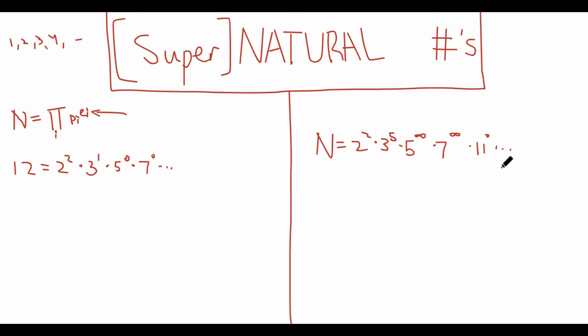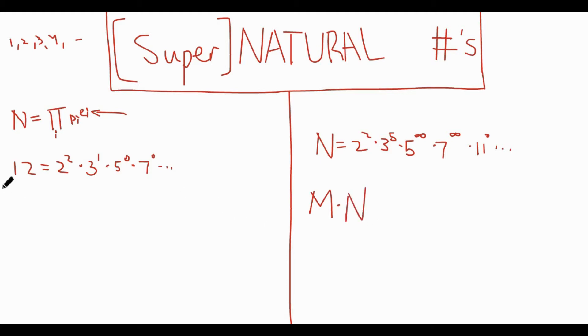Now, this may seem kind of strange. Wouldn't all supernaturals just be equal to infinity? Well, that's true, and this delves into some more complicated math. However, the idea of supernatural numbers was pretty appealing to me, as they have a lot of the same properties as regular natural numbers. For example, if you wanted to multiply two supernatural numbers m times n, you'd do it just like with a natural number.